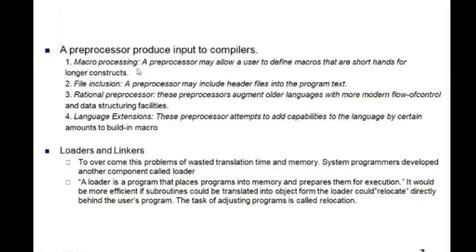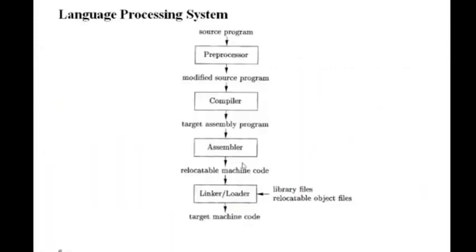To summarize the language processing system: the preprocessor handles macro processing, file inclusion via #include, and rational pre-processing for older language constructs. The compiler converts source code, the assembler outputs relocatable machine code where the first instruction starts at address zero and successive instructions are positioned based on instruction size. The linker and loader take that relocatable machine code, place the program into memory, and adjust addresses for execution.